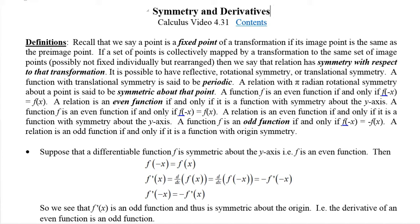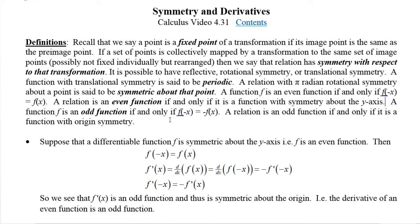It's possible to have reflective, rotational, or translational symmetry. A function with translational symmetry is said to be periodic. A relation with 180-degree rotational symmetry about a point is said to be symmetric about that point. A function is even if and only if f of minus x equals f of x — it's symmetric about the y-axis. A function is an odd function if and only if f of minus x is the opposite of f of x, and a relation is an odd function if and only if it has origin symmetry.